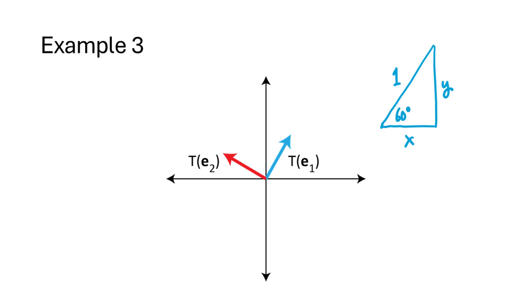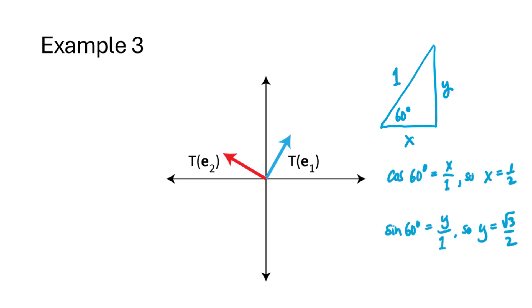What is t(e1)? Using a little trigonometry, the hypotenuse of the triangle is the vector t(e1). Since e1 is 1 unit long, when we rotate it, it's still 1 unit long. We have a right triangle with a 60-degree angle, so the horizontal side is 1/2 and the vertical side is √3/2. Therefore t(e1) is the vector (1/2, √3/2).